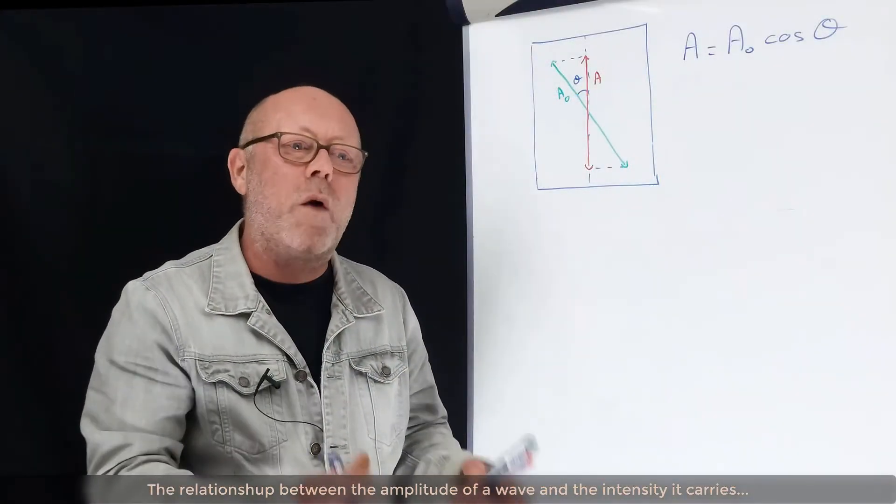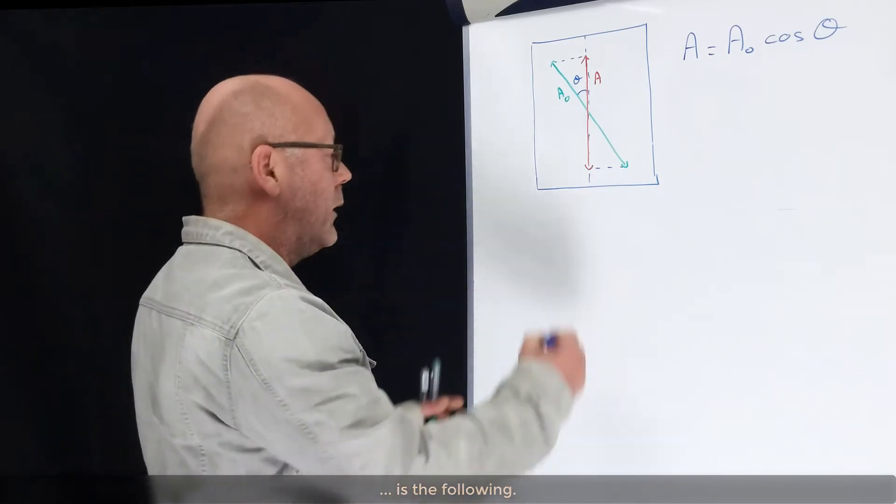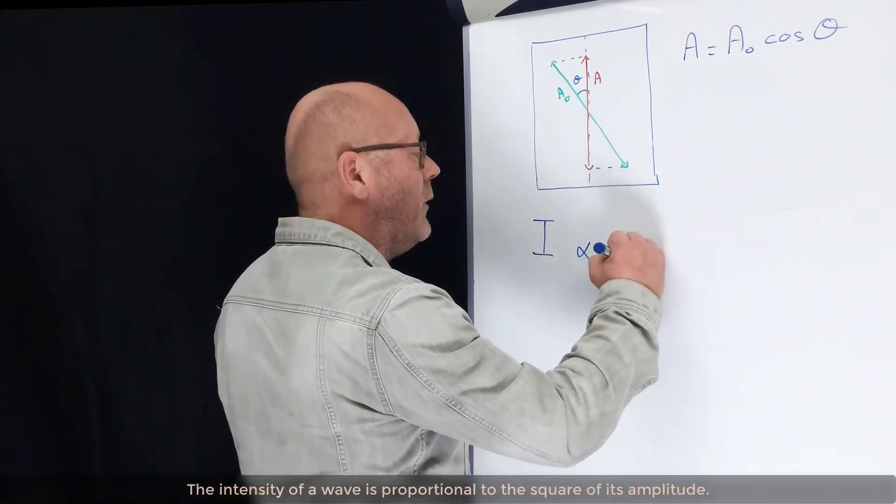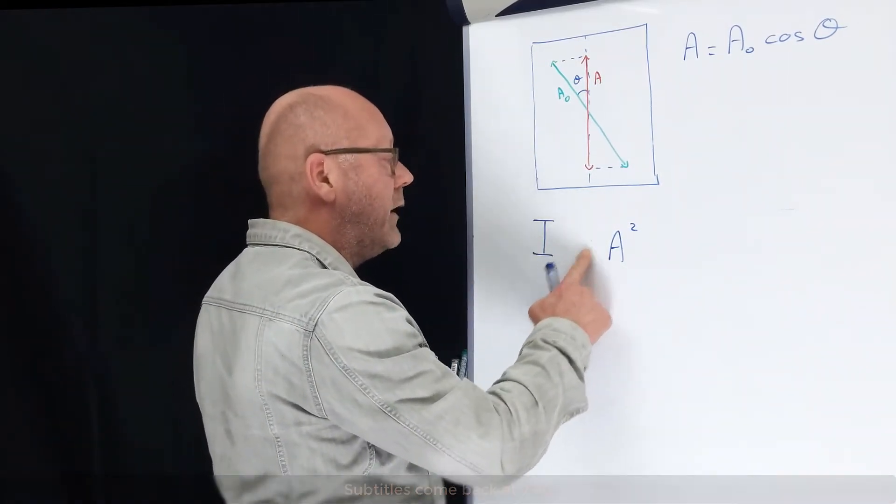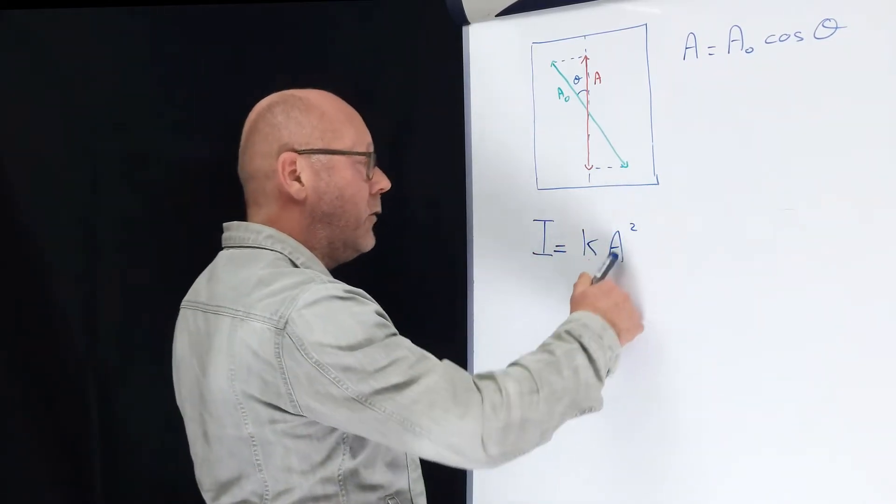The relationship between the amplitude of a wave and the intensity it carries is the following. The intensity of a given wave is proportional to the square of its amplitude. I can rewrite this differently. I can write that the intensity of a given wave is equal to a constant multiplied by the square of its amplitude.